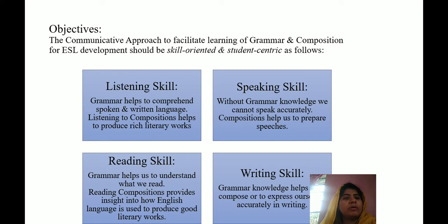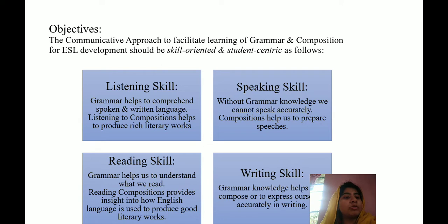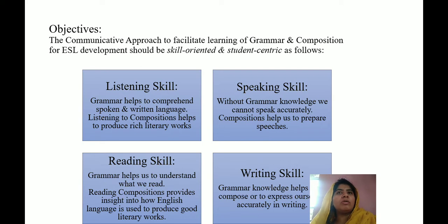Writing skill: without proper grammar knowledge we cannot write, because writing needs a lot of grammatical accuracy. While speaking we can skip grammar — sometimes we make grammatical errors and it won't be much of a problem as far as communication is concerned. But when communication comes through writing, grammar accuracy is very important. If you use an 'are' in place of an 'is', or 'was' in place of 'were', the entire meaning changes. So, accuracy of grammar is very essential when it comes to writing skill.